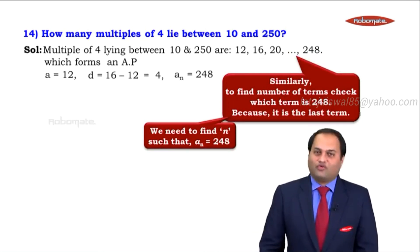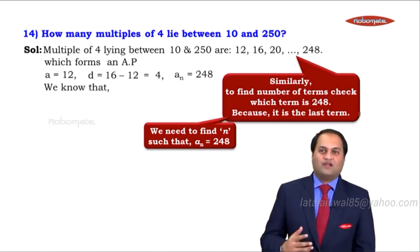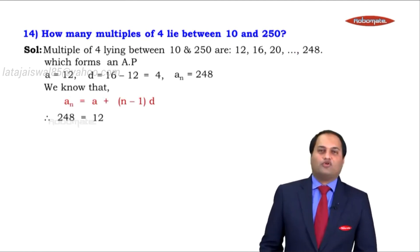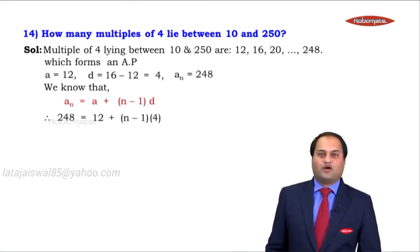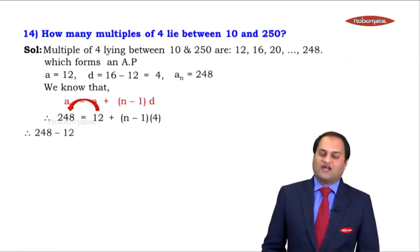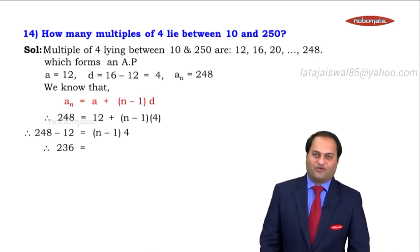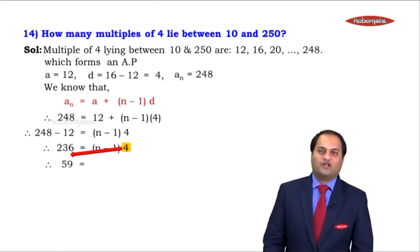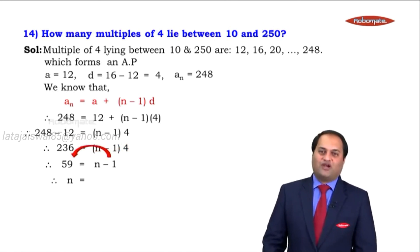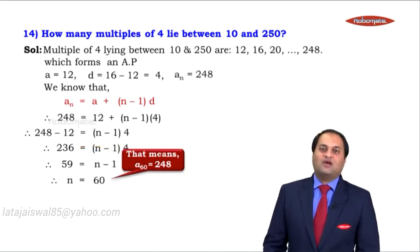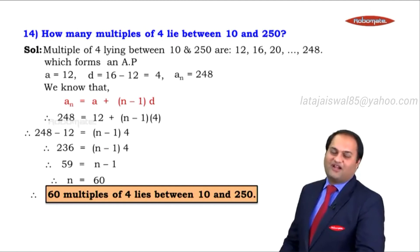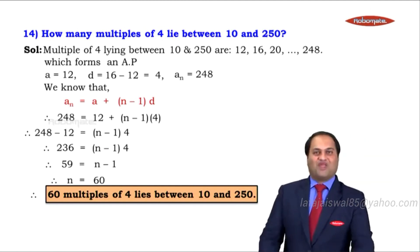Using AN = A + (N − 1) × D: 248 = 12 + (N − 1) × 4. So 248 − 12 = (N − 1) × 4, giving 236 = (N − 1) × 4. Dividing by 4: 236 ÷ 4 = 59 = N − 1. Therefore N = 59 + 1 = 60. There are 60 multiples of 4 that lie between 10 and 250.